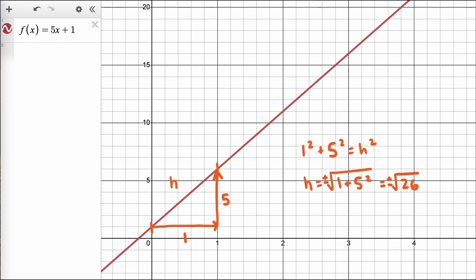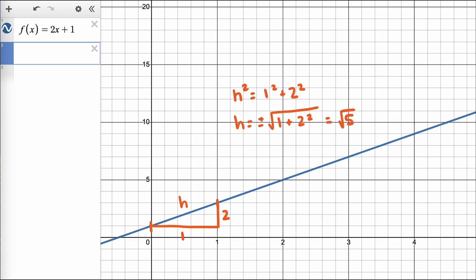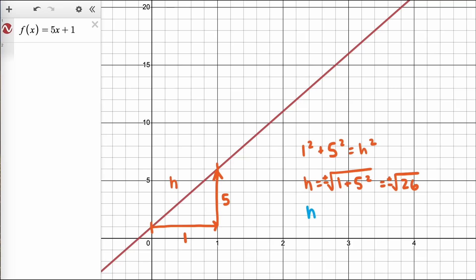If we try a few more lines, we can start to see a pattern. Slope of 2 gives us a square root of 5. Slope of negative 6 gives us a square root of 37. Each one is the square root of 1 plus the slope squared.